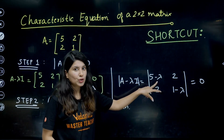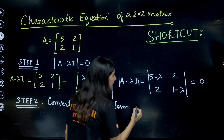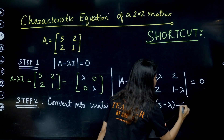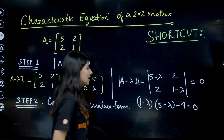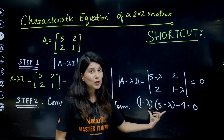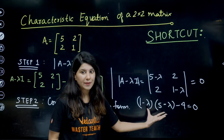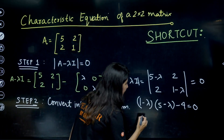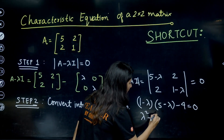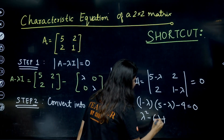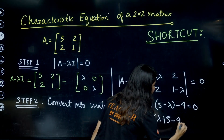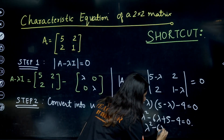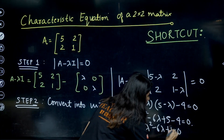Expanding the 2×2 determinant: (1−λ)(5−λ) minus 4 = 0. Expanding gives λ² minus 6λ plus 5 minus 4 = 0, so finally λ² − 6λ + 1 = 0. This is the quadratic equation in λ.